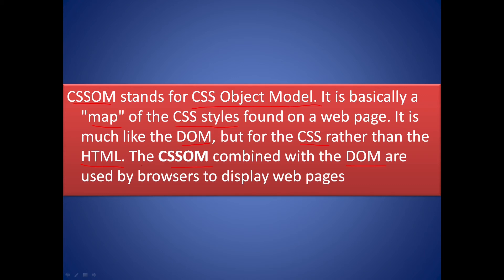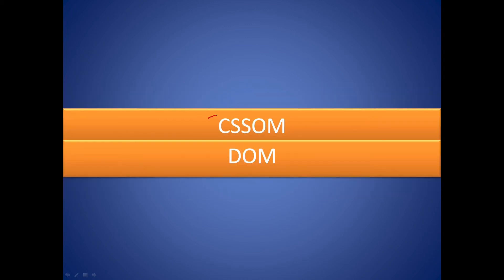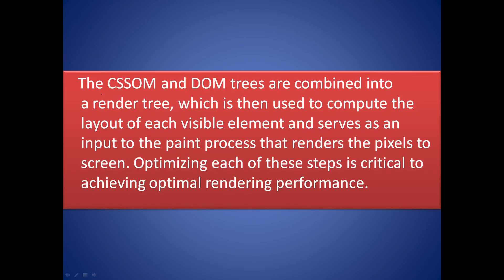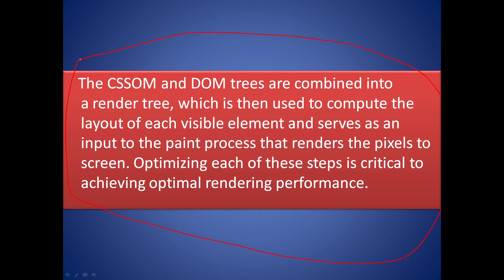Now, why are we talking about CSSOM and DOM in the middle of rendering? How are CSSOM and DOM related to the rendering process? The CSSOM and DOM trees are combined into a render tree, which is then used to compute the layout of each visible element and serves as input to the paint process that renders the pixels to the screen. Optimizing each of these steps is critical to achieve optimal rendering performance.